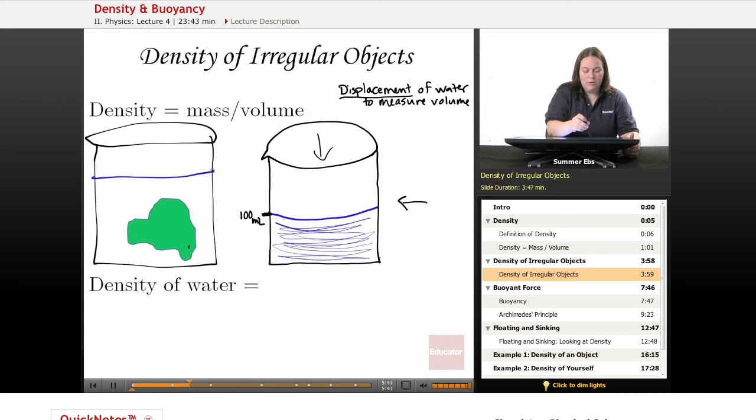The water level will rise. Now your new measurement is right here. Let's say it went up to 200 milliliters. The amount the water was displaced is between 100 and 200 milliliters. The difference between the two, all you have to do is subtract.